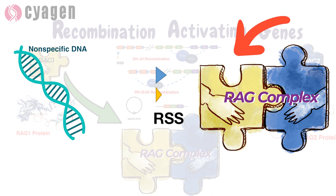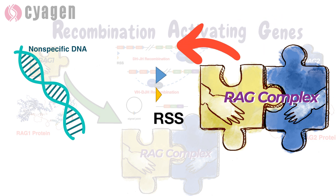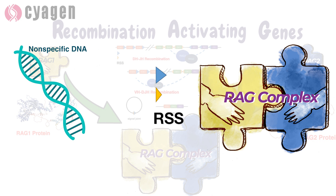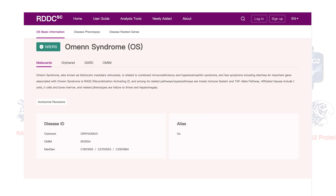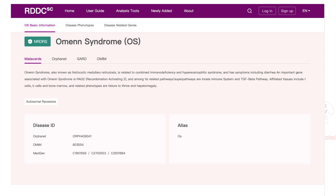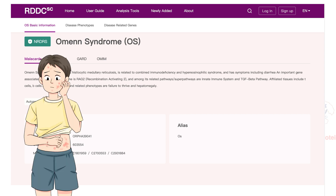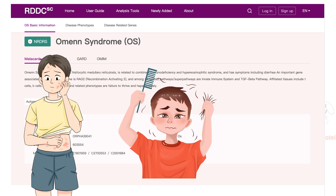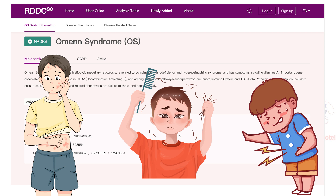The RAG complex has cleavage activity in VDJ recombination. These results illustrate that RAG2 may function in VDJ rearrangements to assist RAG1 recognition of DNA, as efficient binding and recognition of the RSS requires the concomitant presence of both RAG1 and RAG2. Omenn syndrome is an inherited autosomal recessive disorder of the immune system, a form of severe combined immunodeficiency characterized by erythroderma, alopecia, and chronic diarrhea.